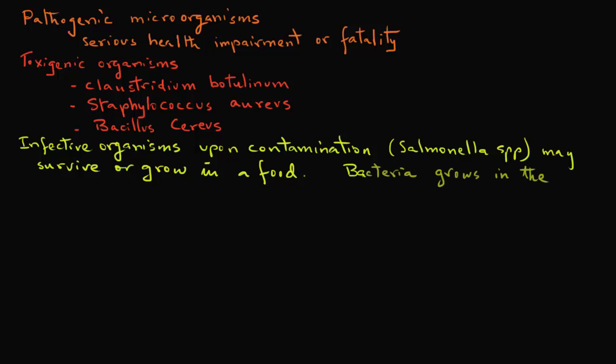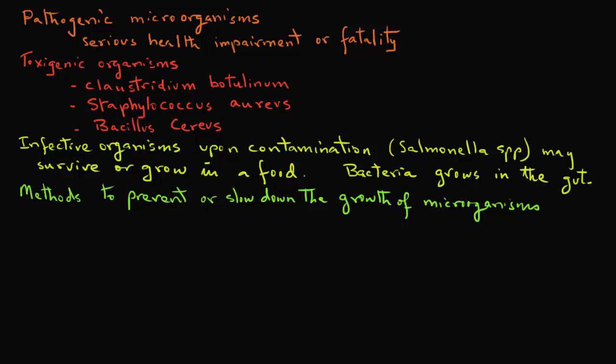The bacteria then can grow in the gut of the person and then lead to food poisoning and infection. Now, in food processing, several methods are used to prevent or slow down the growth of microorganisms during storage and distribution of foods.